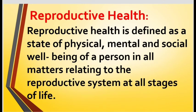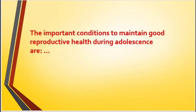Reproductive health is defined as a state of physical, mental, and social well-being of a person in all matters relating to the reproductive system at all stages of life. Let us know the important conditions essential to maintain good reproductive health during adolescence.